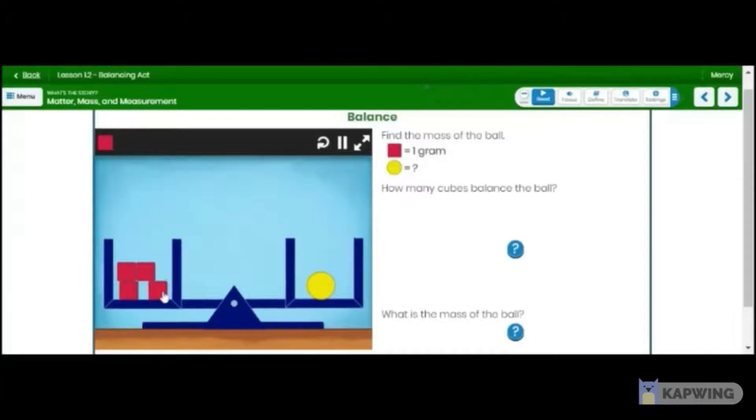So it takes four squares. Look, one, two, three, four. Four squares, four red squares, to make it balance with one yellow circle over here. So what do you think the answer would be? If one red square equals one gram, what would one yellow circle equal to? Four red squares. Sorry, it says four red cubes. Yeah. So it takes four red cubes to weigh the same as one yellow circle or sphere. Ball.